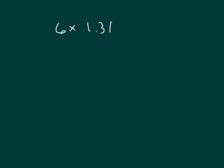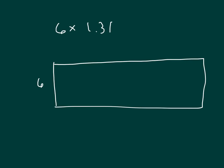Let's use an area model to solve this problem. So the 6 gets distributed to the 1 one, to the 3 tenths, and the 1 hundredth. 6 times 1 is 6 ones, plus the 3 tenths.